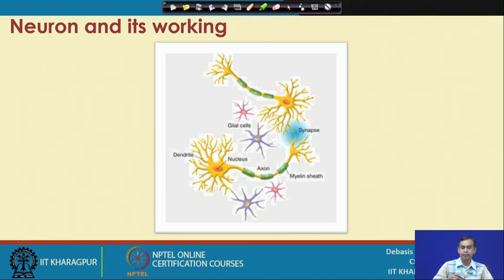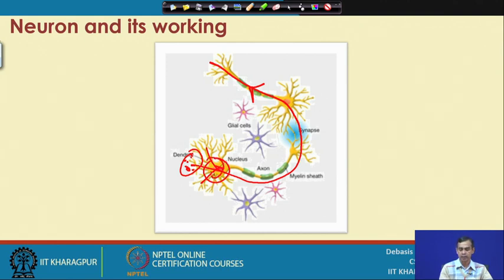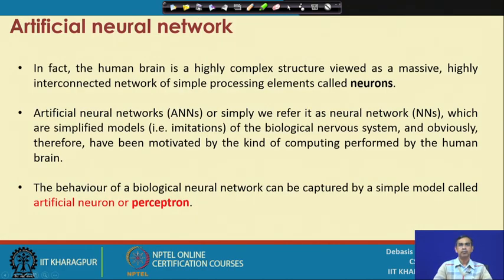Looking at the signal flow diagram: some event occurs, which produces electrical pulses that flow through the neurons. At the point where neurons are located they receive this pulse, pass it to the next neuron, sum it up at the soma, and when the signal strength is greater than the threshold value it is passed to the synapse and then on to other neurons. This is how signal propagation takes place in our neurons.